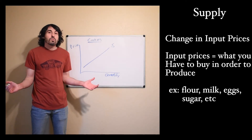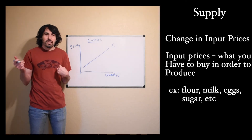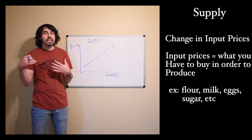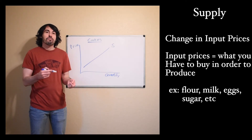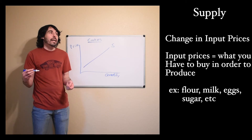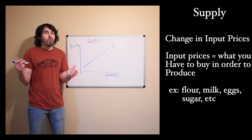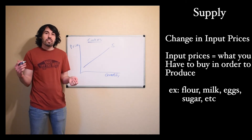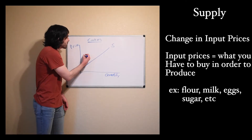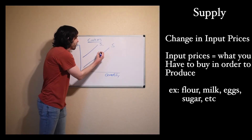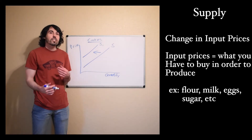Another input that could change could be wages. If wages increase for cookie producers — maybe they unionized and fought for higher wages — now that wages have gone up, the cookie manufacturer has to pay people more money to work. So there might not be as much money to buy other inputs like milk and flour, or maybe fewer people can be hired while still maintaining the same profit. So if wages increase, then the supply of cookies would shift to the left, and at every price, fewer cookies are being offered because it costs more to produce them.